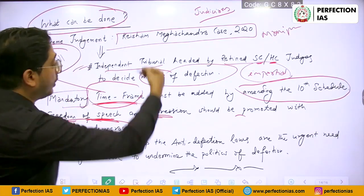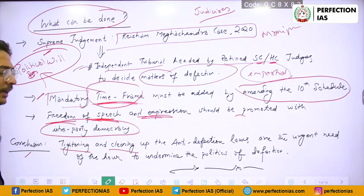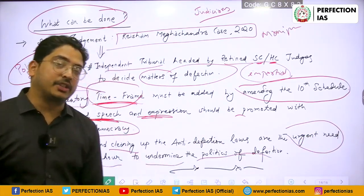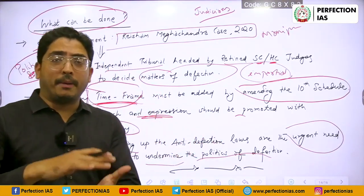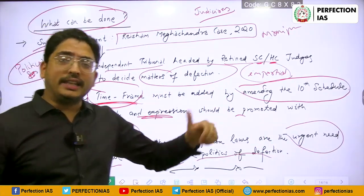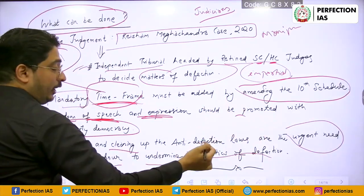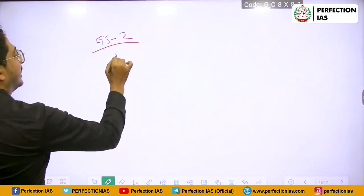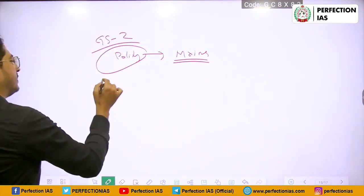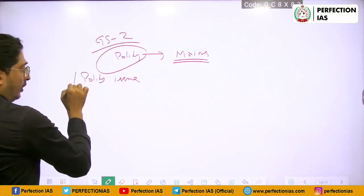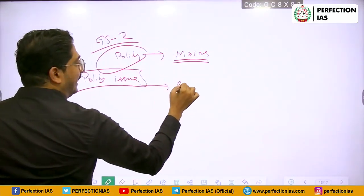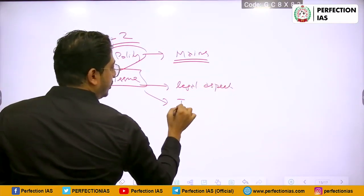Conclusion: since this is 150 words, we can write — 'Tightening and cleaning up the anti-defection laws are the urgent need of the hour to undermine the politics of defection.' This is how in 150 words we give content, two perspectives, judiciary angle, and legal-constitutional angle. One important thing to note: when writing GS2 polity answers in mains, always give a legal aspect and a judicial aspect.